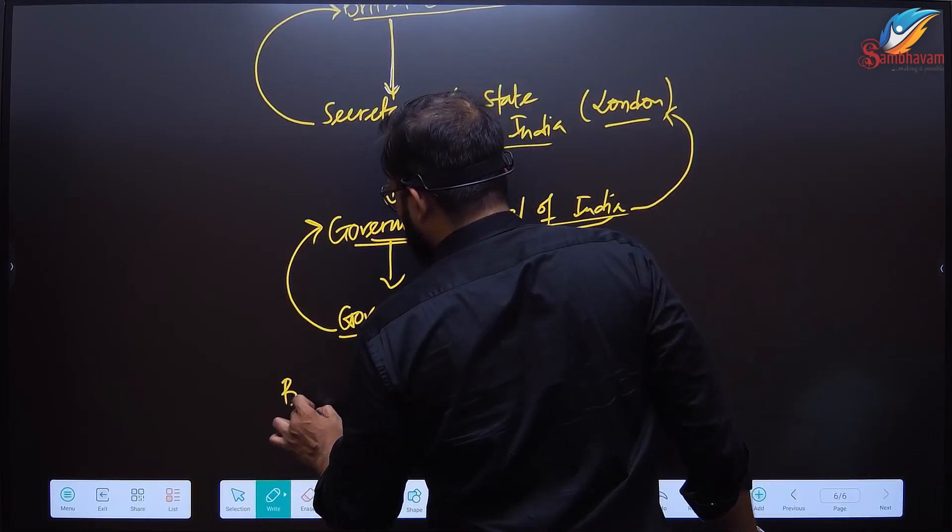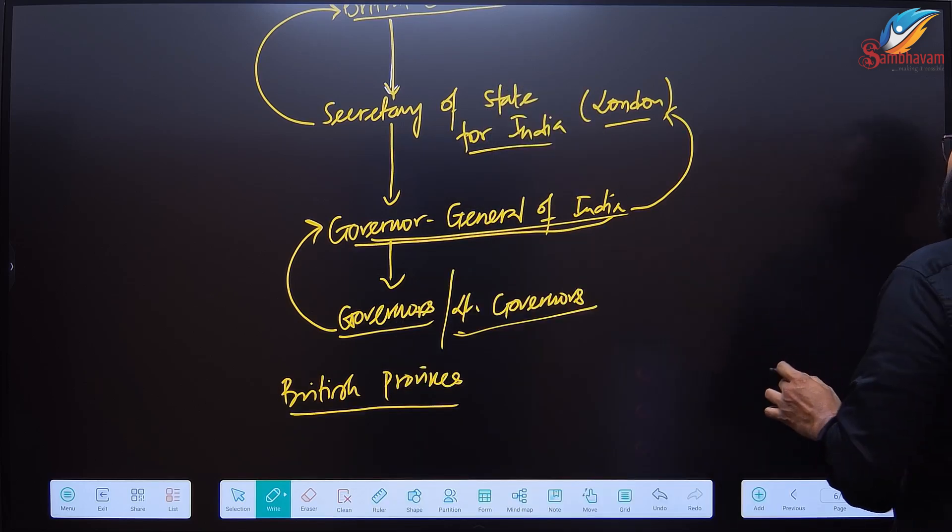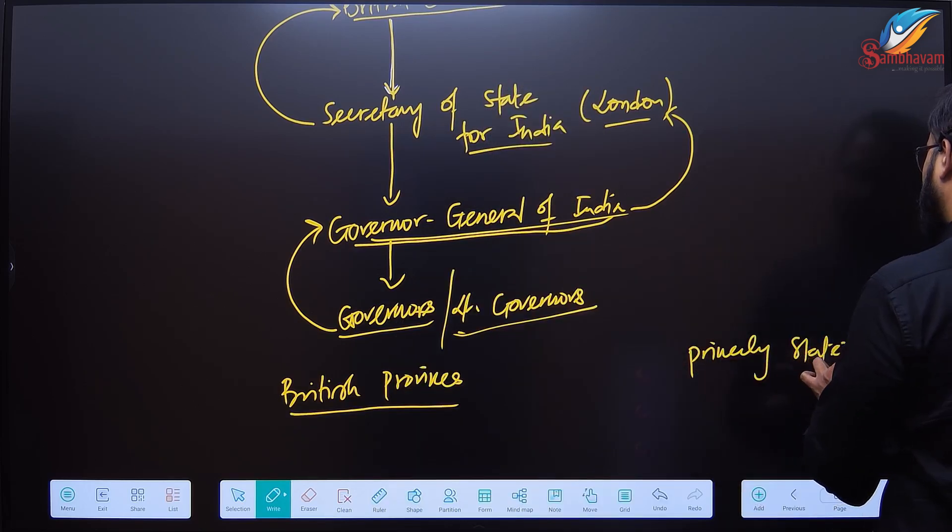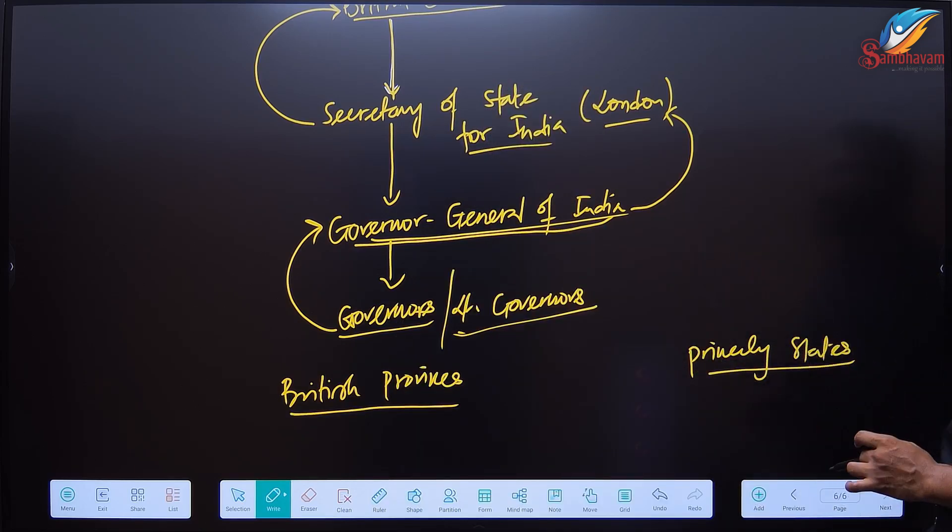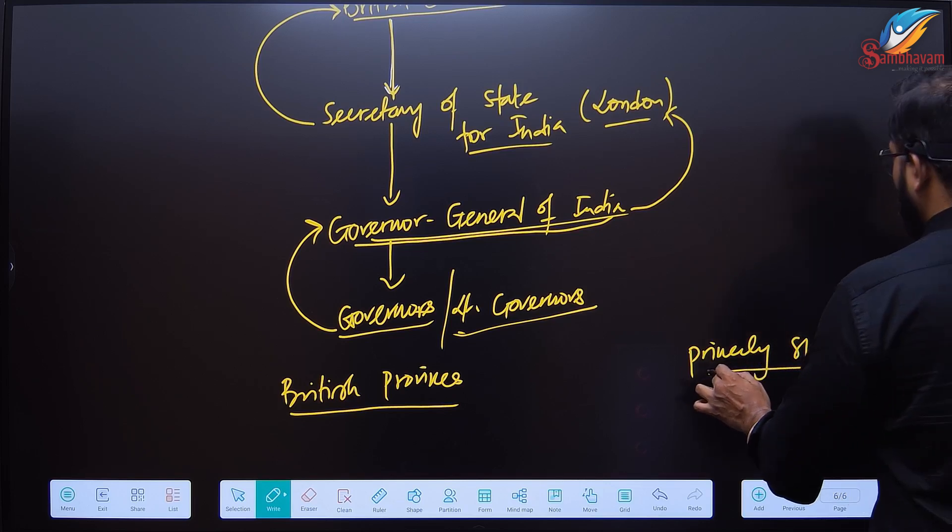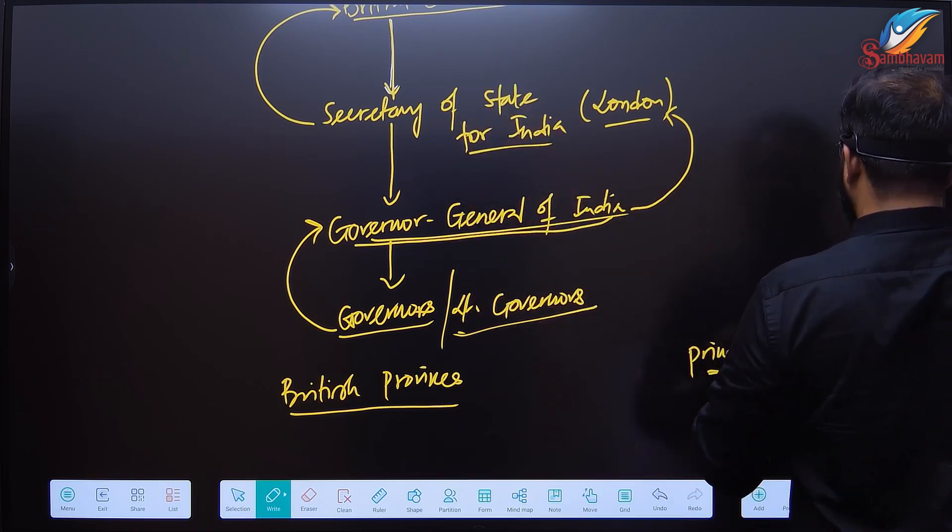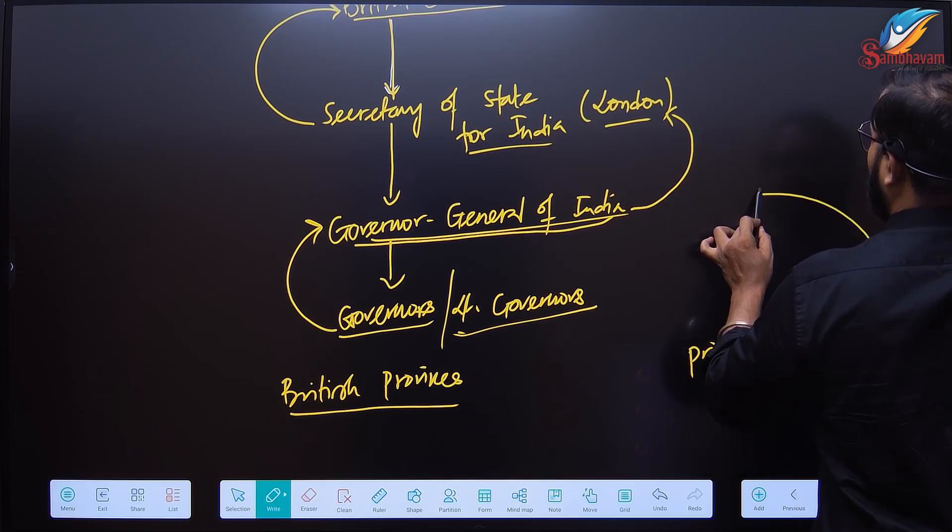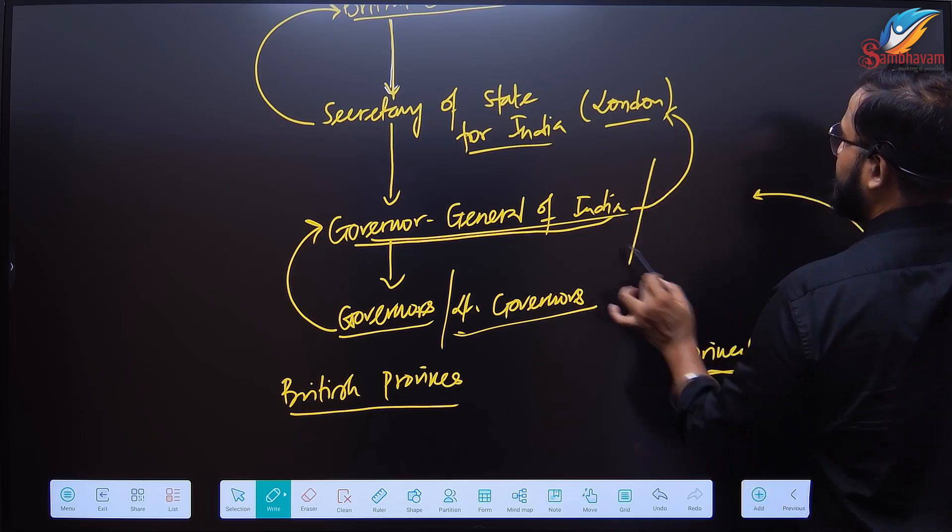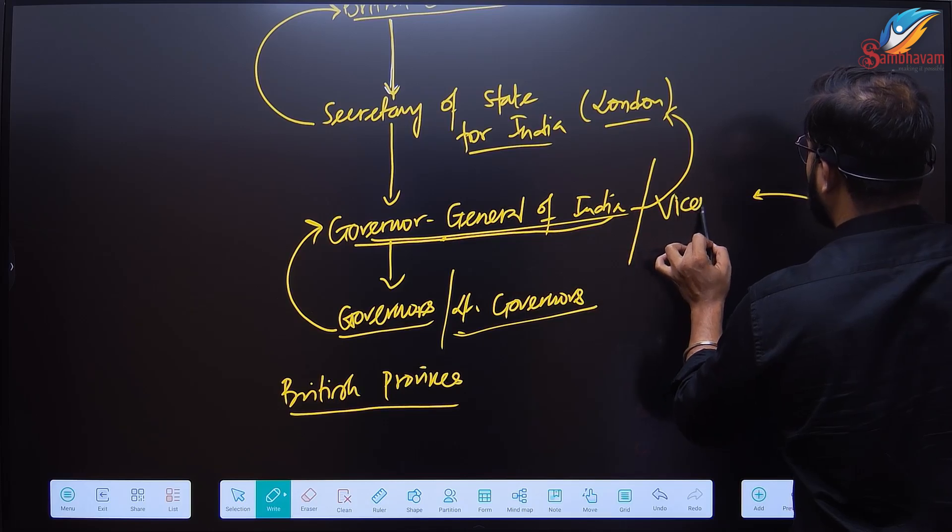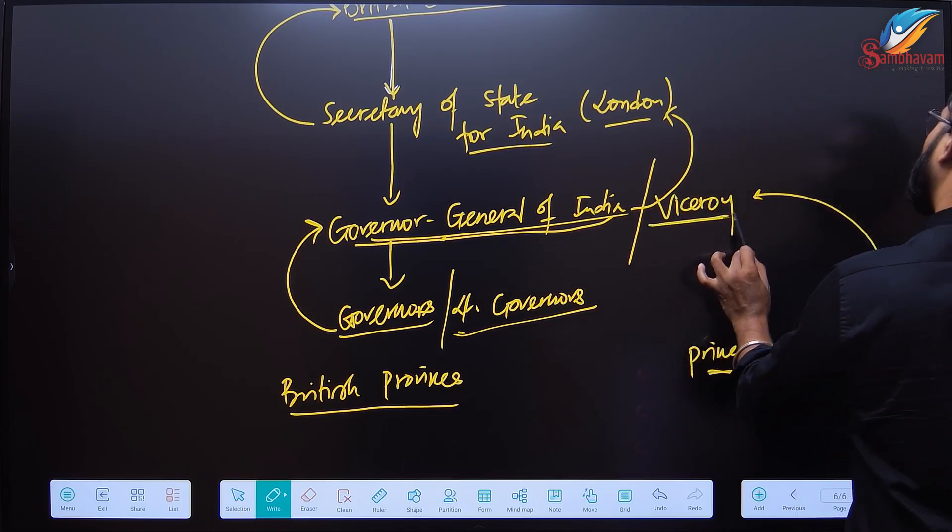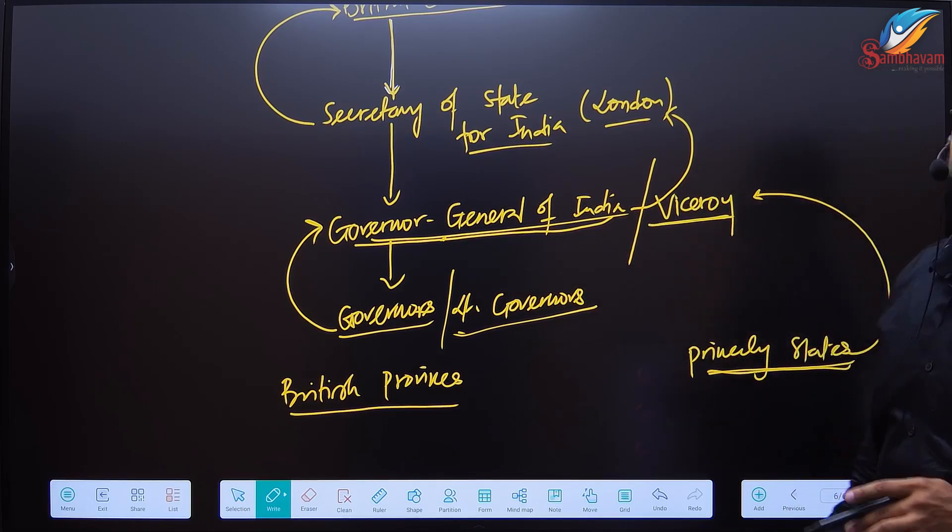This structure is applicable for the British provinces. What about the princely states? I have already discussed they are promised against future annexation. They did not have to follow this chain of hierarchy. They communicated directly with another position created, that is the Governor General of India, also known as Viceroy.